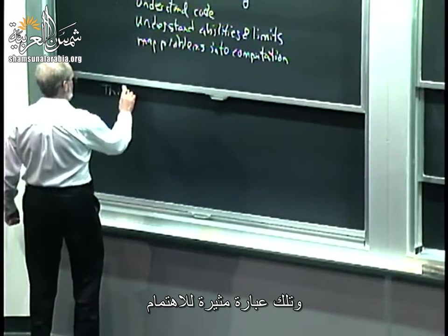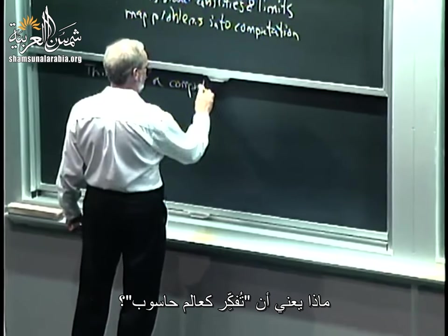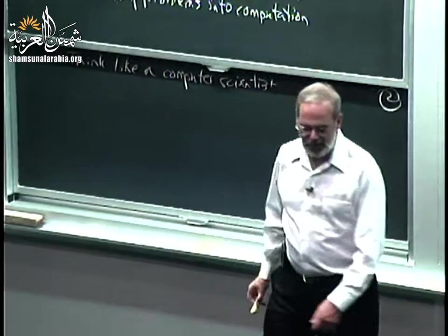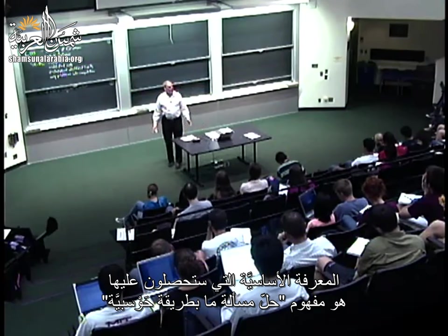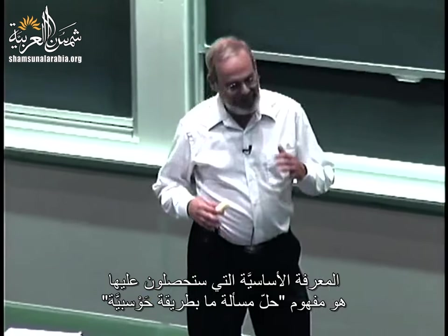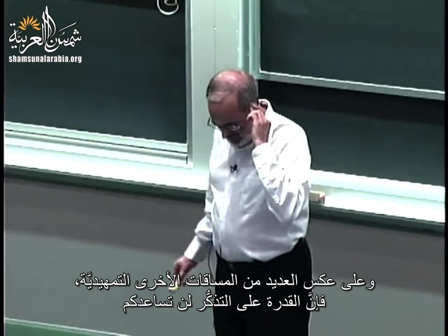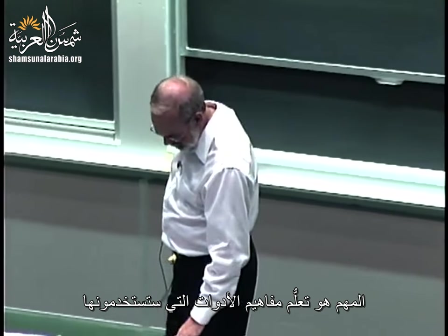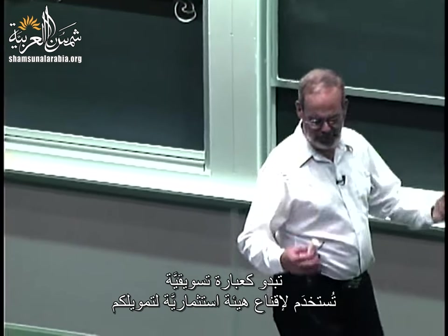What does it mean to think like a computer scientist? The primary knowledge you're going to take away from this course is this notion of computational problem solving, this ability to think in computational modes of thought. Unlike in a lot of introductory courses, having the ability to memorize things is not going to help you — it's really learning those notions of the tools that you want to use.